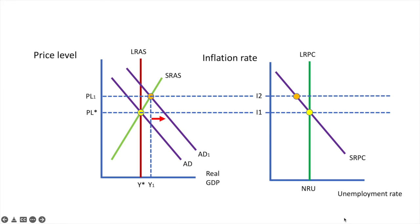Any shift of aggregate demand along the original short-run aggregate supply curve can be demonstrated as follows. The blue dots appearing on the diagram on the left correspond to the matching blue dot on the diagram on the right. Now let's see what happens when inflationary expectations cause the short-run aggregate supply curve to shift leftwards from SRAS to SRAS-1.